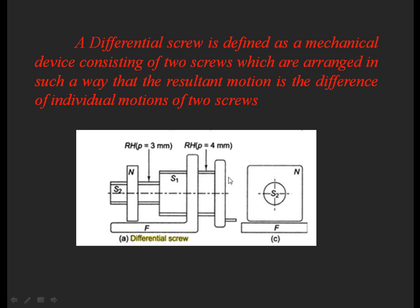When you rotate the screw, the nut appears to move to the right by 3 mm — the pitch of screw two — but at the same time the nut moves to the left by the difference of the two individual screw motions. The motion by screw one is 4 mm and the motion by screw two is 3 mm, so the resultant leftward motion of the nut equals the difference: 4 minus 3, which equals 1 mm.